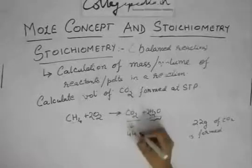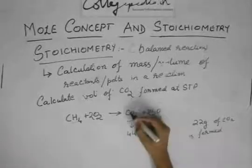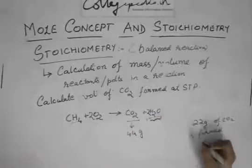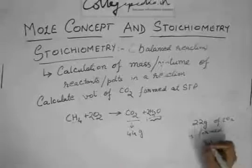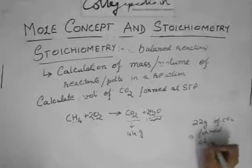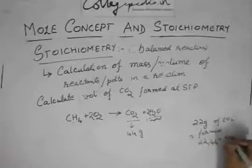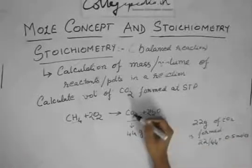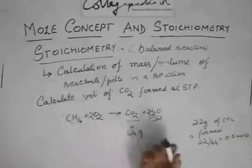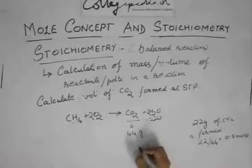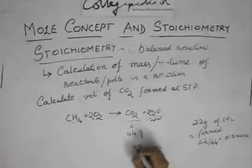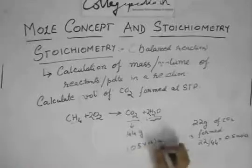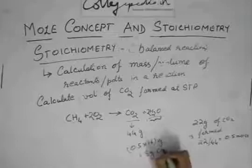So CO2's molecular weight is 44 gram, you can check it 12 plus 32, it's 44. So 22 gram of CO2 would be how many moles? 22 by 44 which is 0.5 moles. So 0.5 moles of CO2 means 0.5 moles of CH4. So 0.5 moles of CH4 would be 0.5 into 16 grams which is 8 gram CH4.